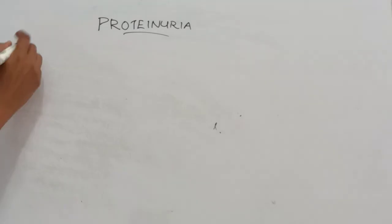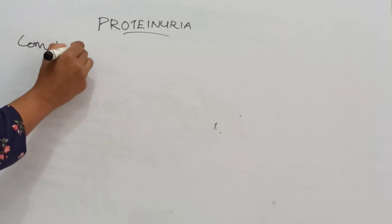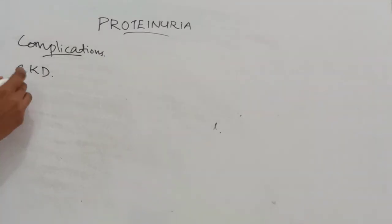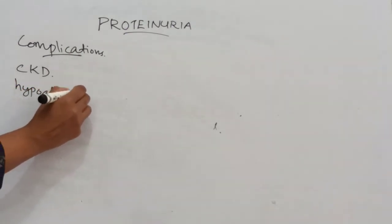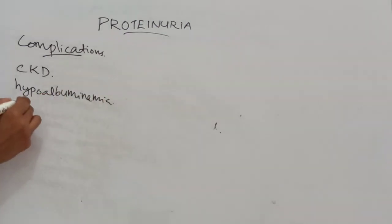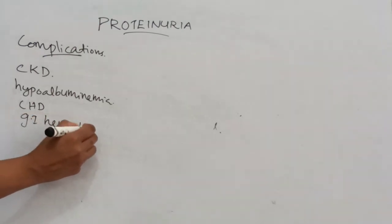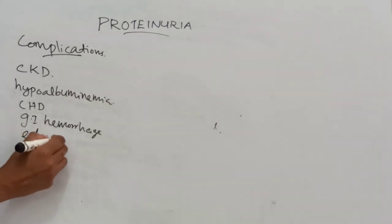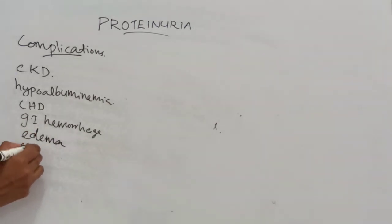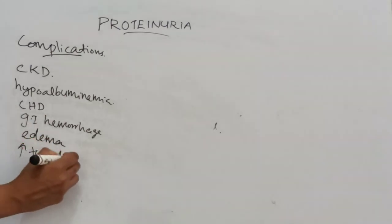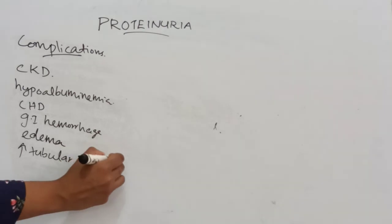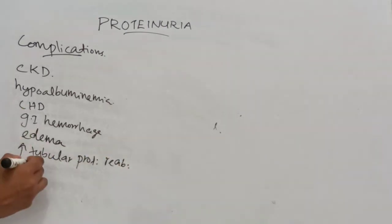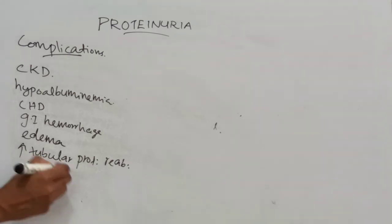Coming to the complications of proteinuria: proteinuria is an early sign of chronic kidney disease. It may cause hypoalbuminemia, coronary heart disease, gastrointestinal hemorrhage, edema, increased tubular protein reabsorption, and increased susceptibility to infections.